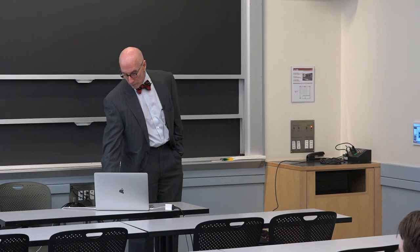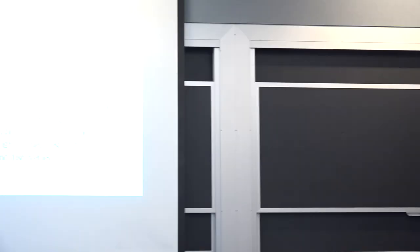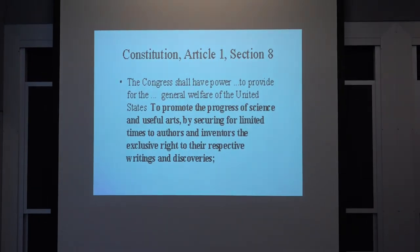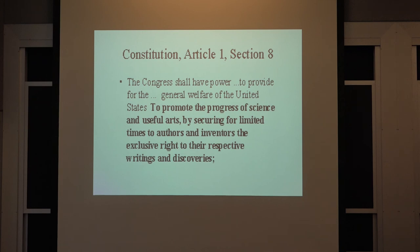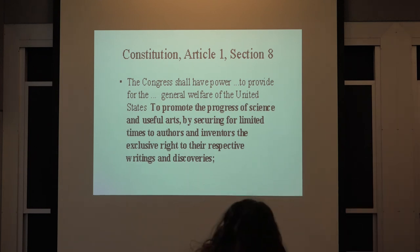Under Article 1, Section 8, there's a clause in the United States Constitution which gives Congress the power to write these laws. The laws that we follow in intellectual property all come from either Congress or the courts. Article 1, Section 8 states pretty plainly that Congress shall have power to provide for the general welfare of the United States. The important clause is to promote the progress of science and useful arts — that's patents — by securing for limited times to authors and inventors the exclusive right to their respective writings and discoveries.